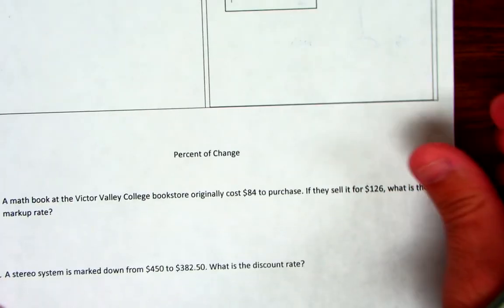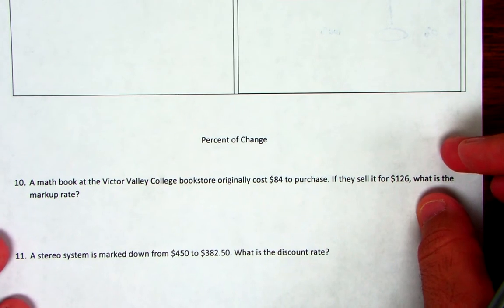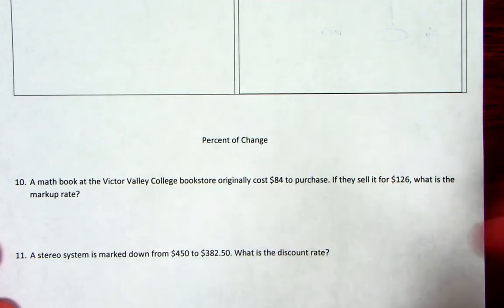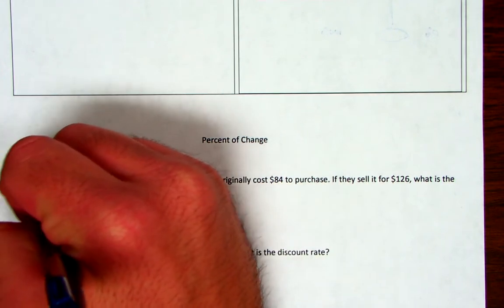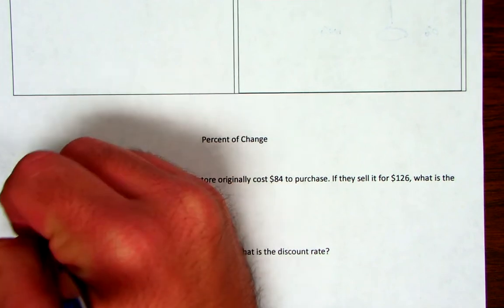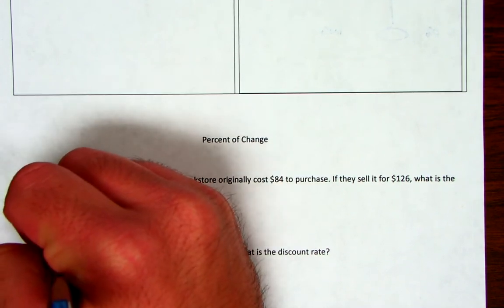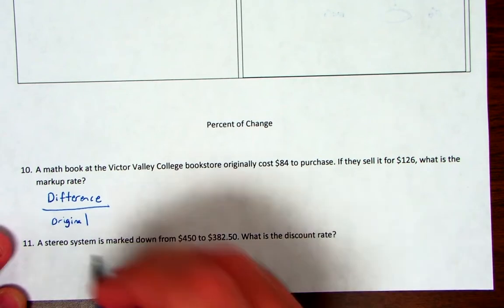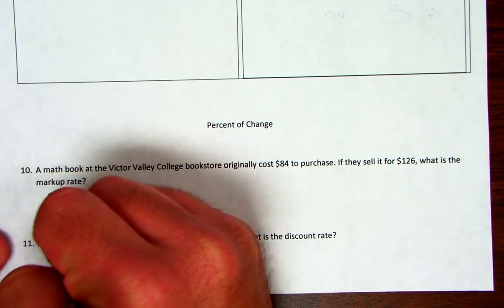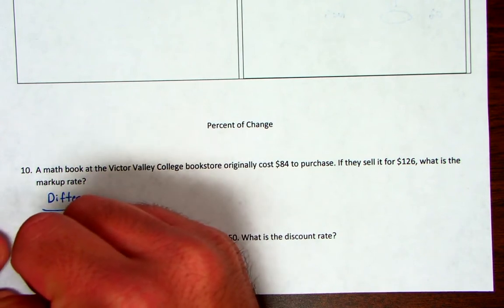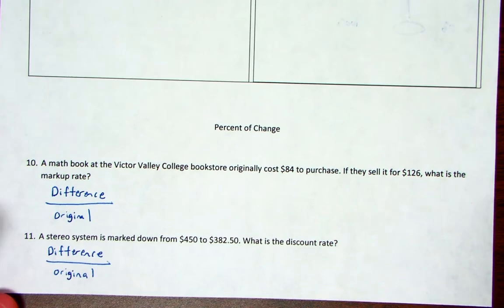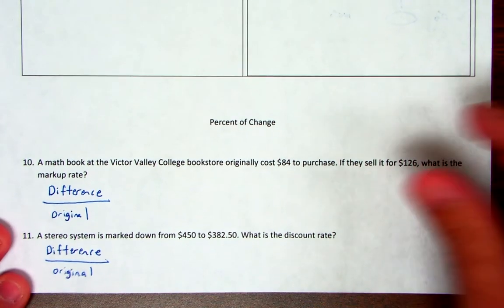I'm going to set up one of these and you're going to finish. Now remember when you are finding percent of change, you have to find the difference from the original to the new. And then you'll put the difference over the original amounts. So I'm going to write this for both of them, just so you remember.